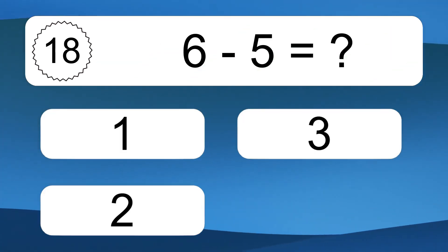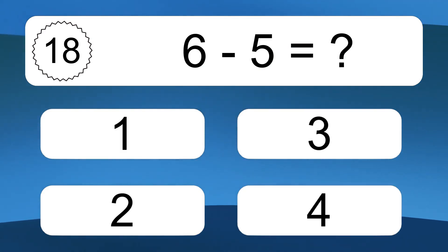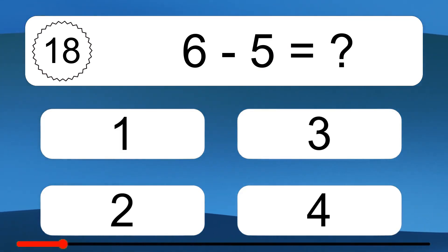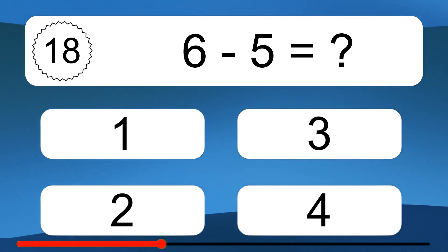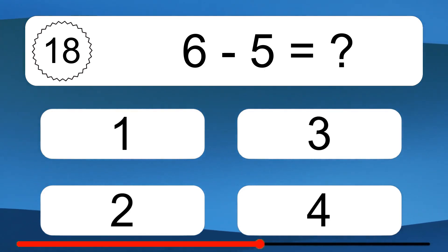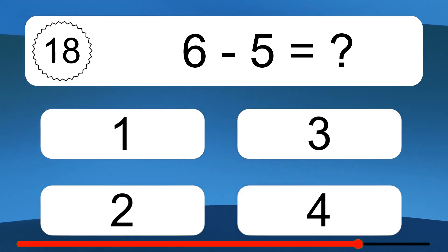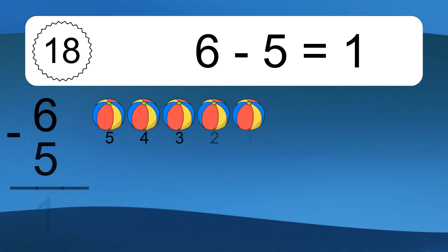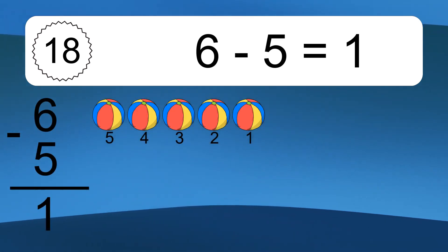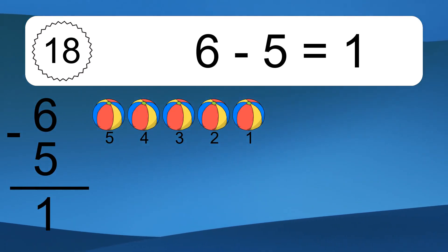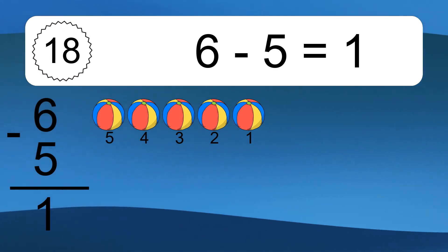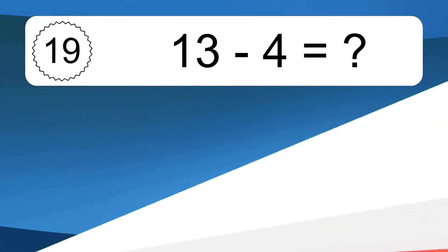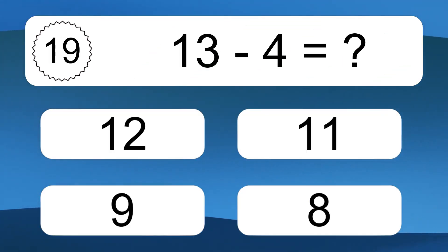6 minus 5 equals what? 6 minus 5 equals 1. Let's count it: 5, 4, 3, 2, 1.